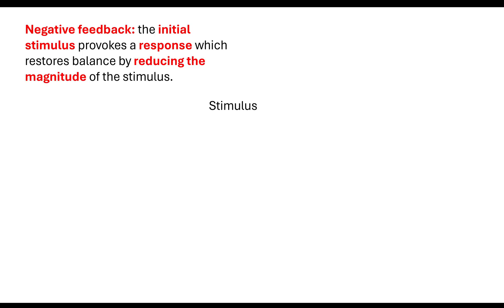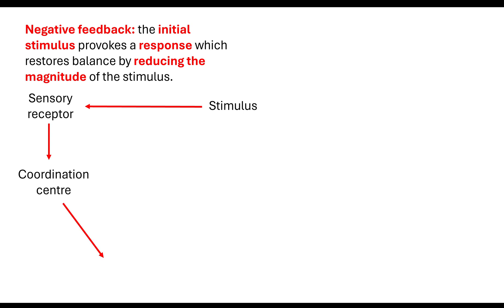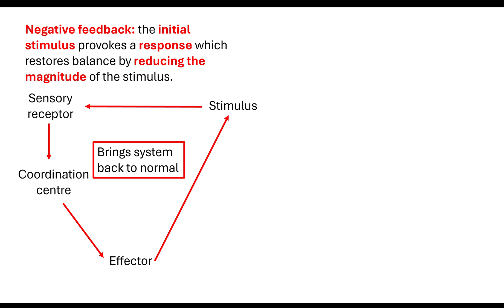To understand homeostasis, the mechanism we talk about most in this topic is negative feedback. Negative feedback is a loop where an initial stimulus provokes a response. The stimulus is detected by sensory receptors, passed to the coordination centre, and then on to the effector. To restore balance, negative feedback reduces the magnitude of that stimulus — it brings the system back to normal by reversing it. If something increases, we decrease it; if something decreases, we increase it. We are bringing the system back to normal through negative feedback.